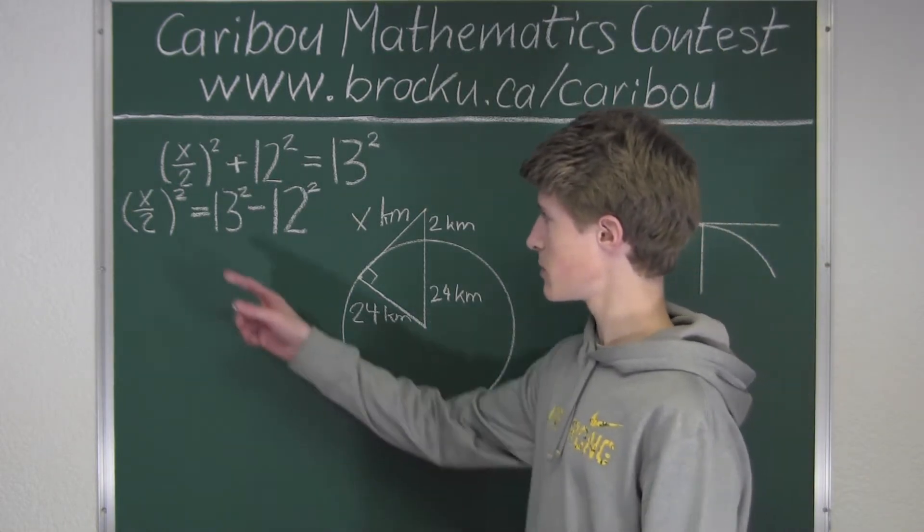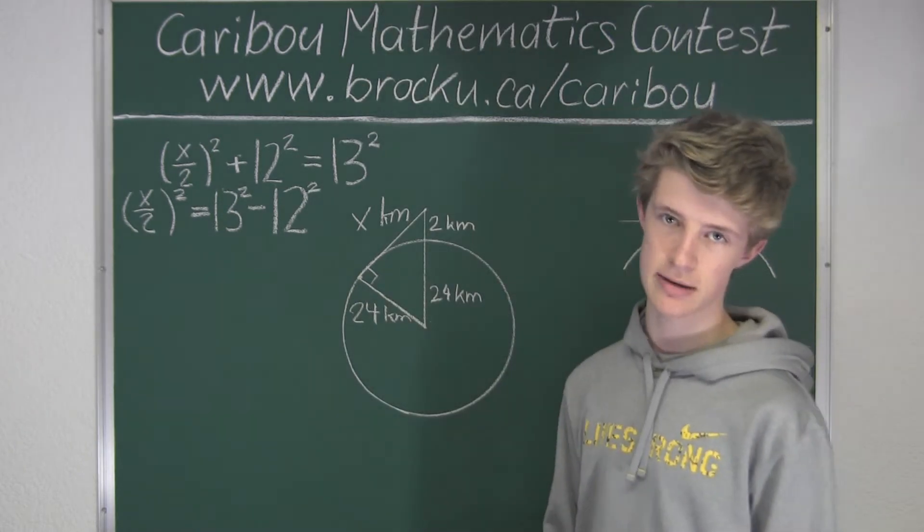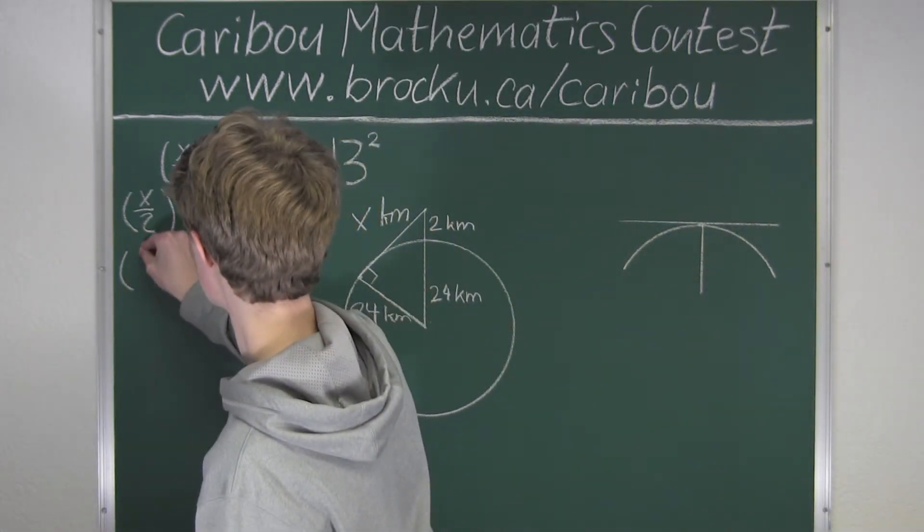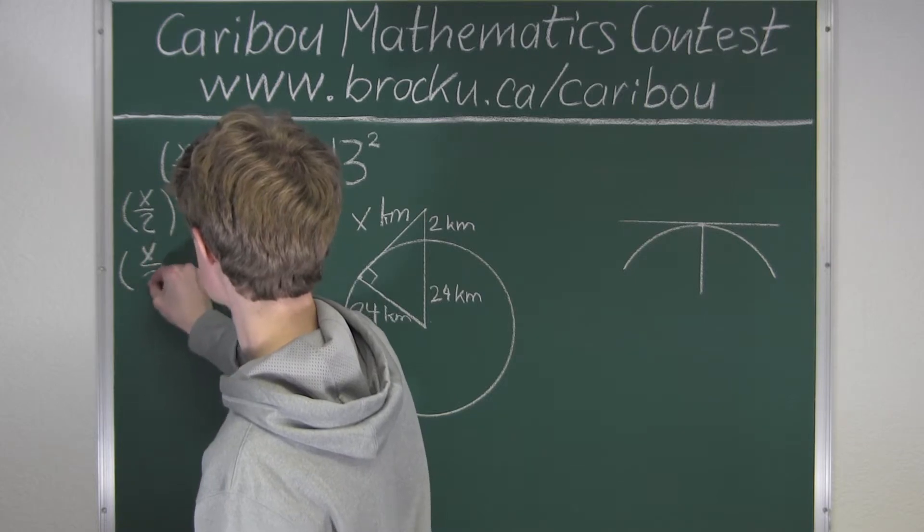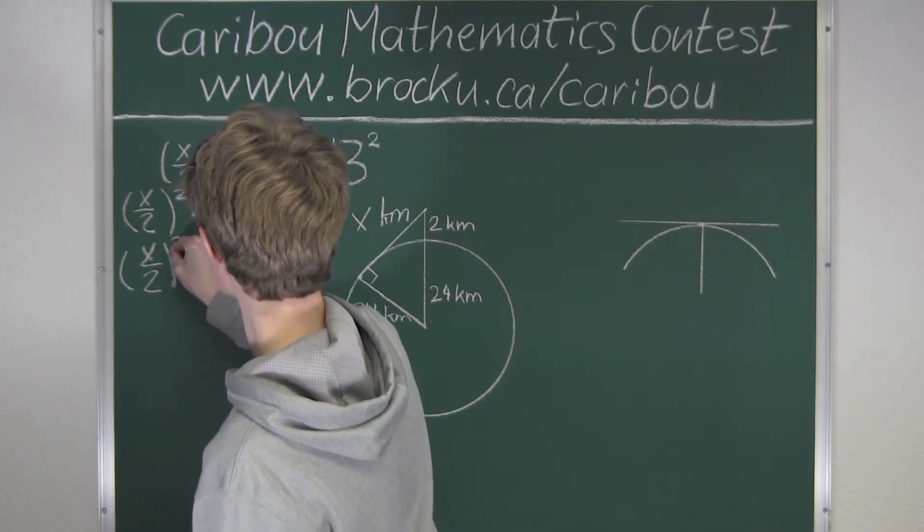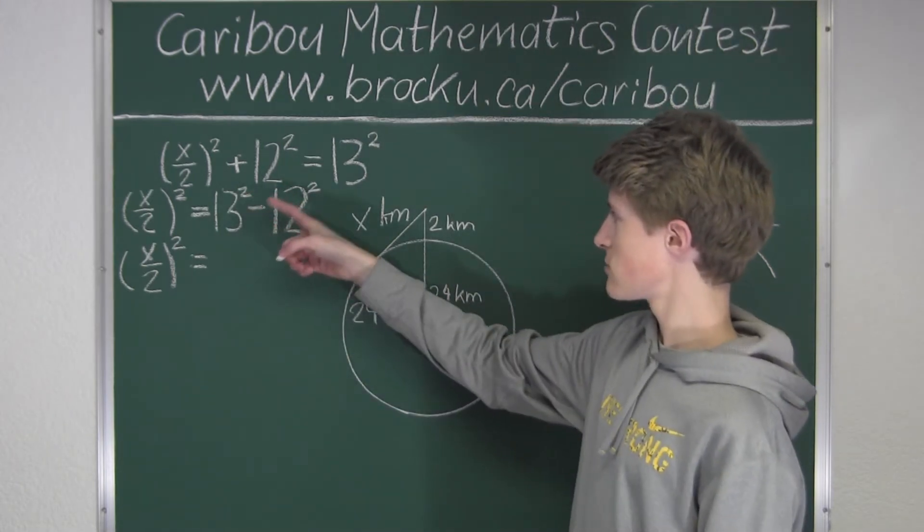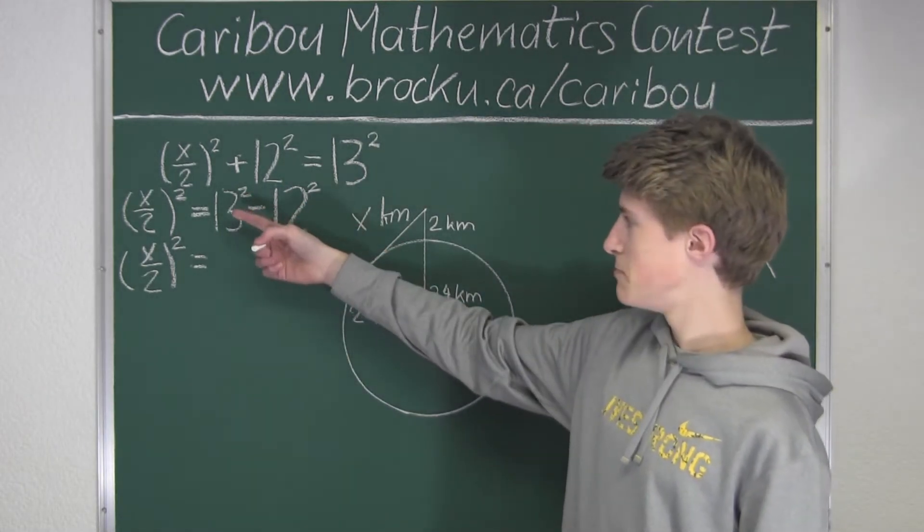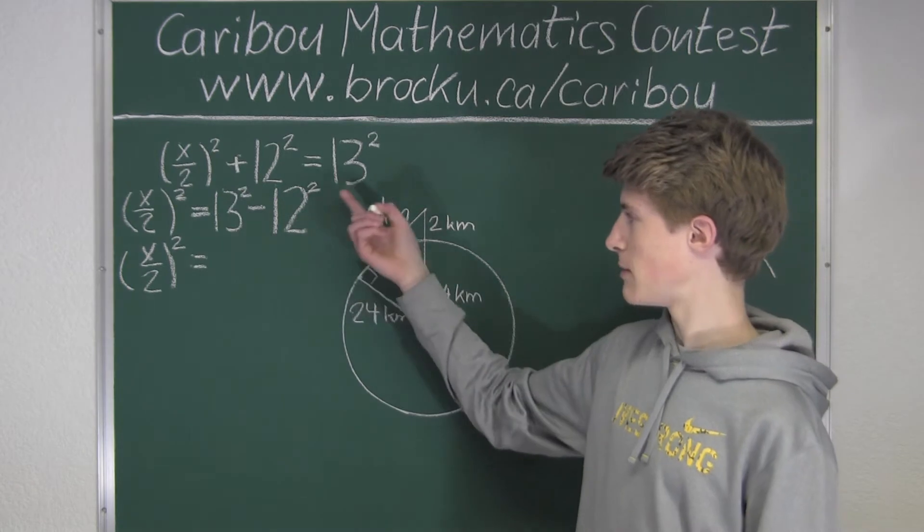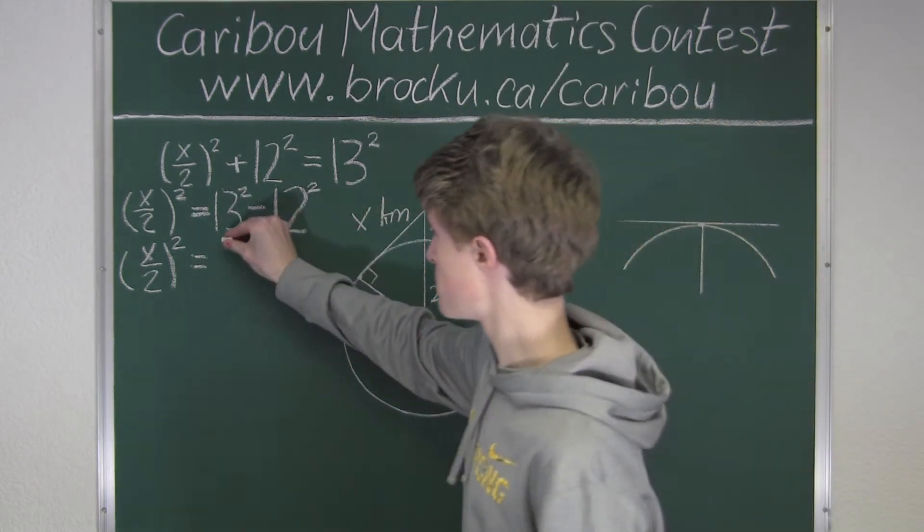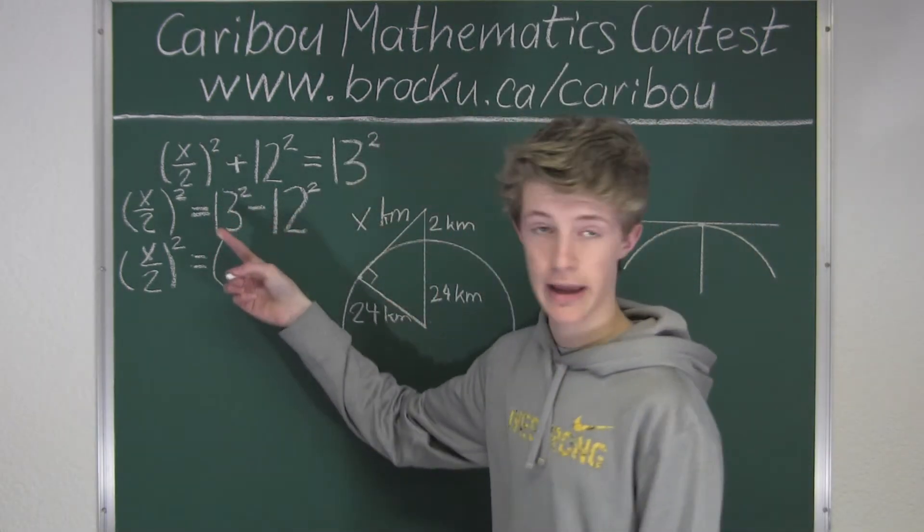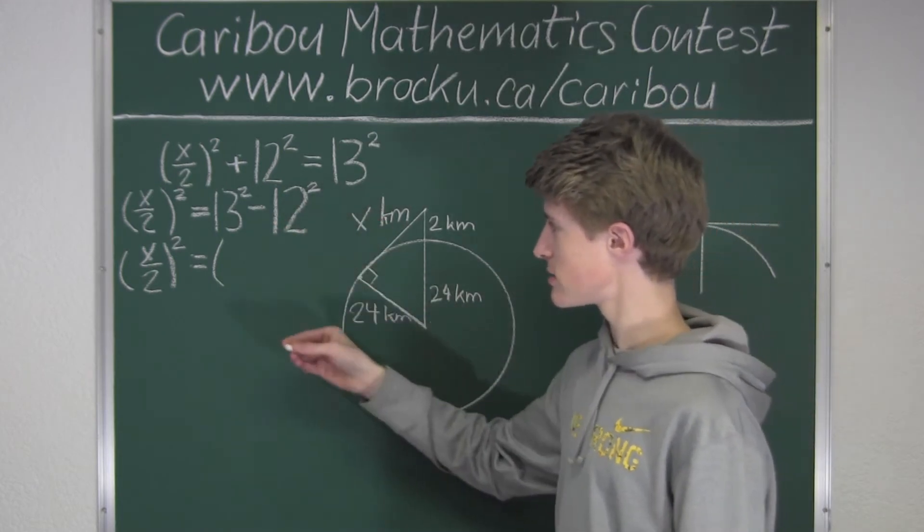Okay, so we would still have (x over 2) in brackets squared. So here, since we have 13 squared minus 12 squared, a would be 13, and 12 would be b. So therefore, we would have a minus b, which is 13 minus 12.